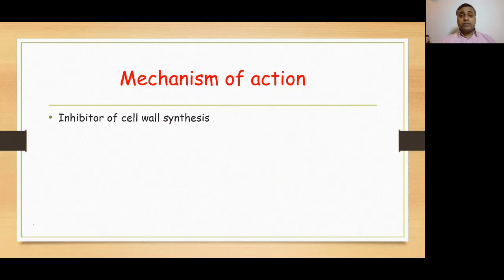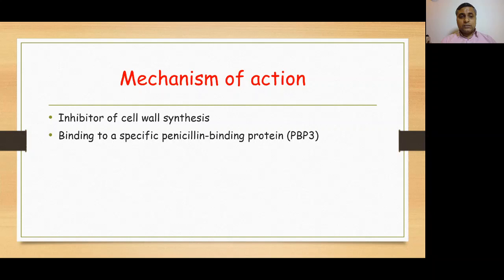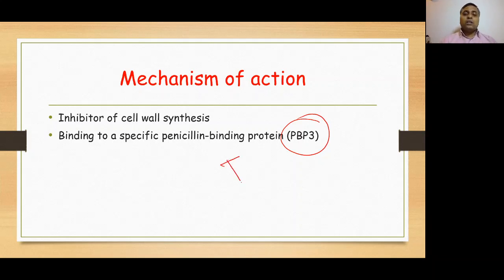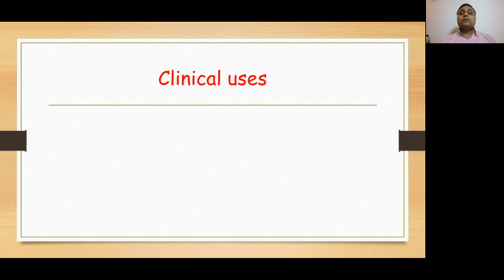Aztreonam is an inhibitor of cell wall synthesis. It binds to a specific penicillin-binding protein, which is penicillin-binding protein 3 (PBP3), and by binding to this it blocks transpeptidase enzyme and the transpeptidation reaction, blocking cross-linking in the synthesis of the cell wall, followed by activation of autolytic enzymes.